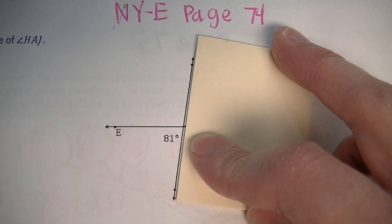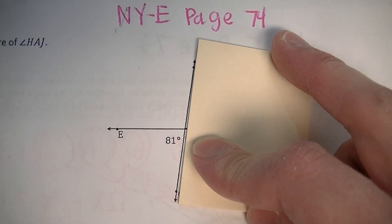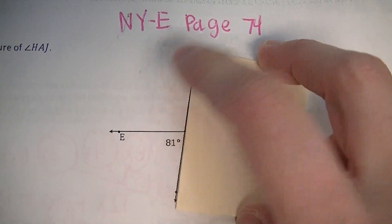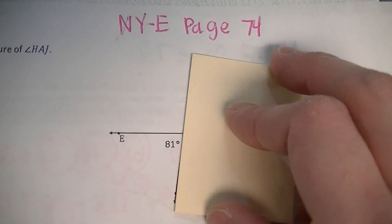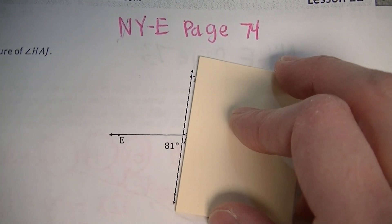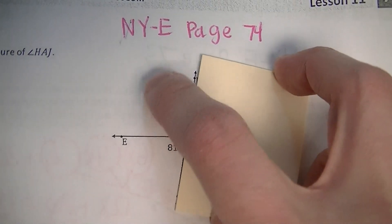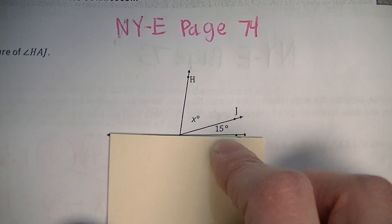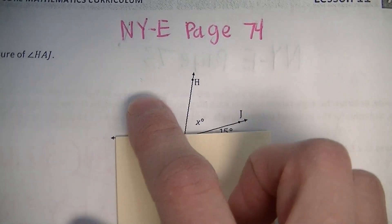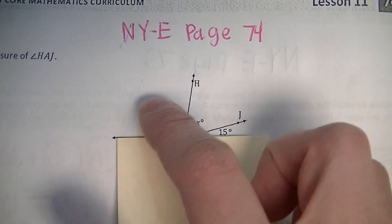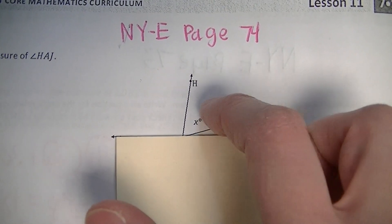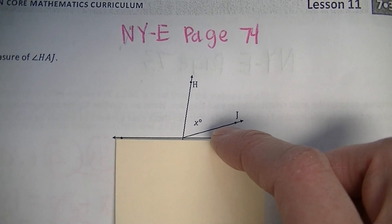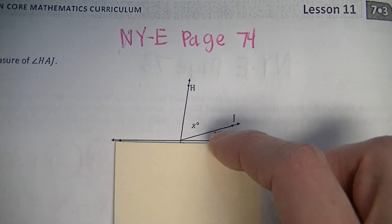Those angles right there are supplementary, so that could help me figure out this angle. I could just go 180 subtract 81 and figure out this angle. And then once I have that angle, I know that I can solve for X because those would be angles on a line and would have a sum of 180 degrees.